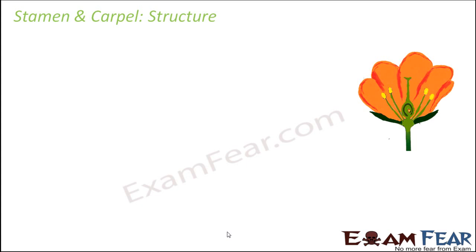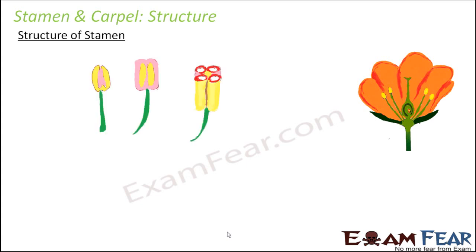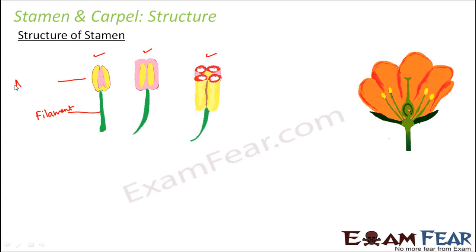Let us look at the structure of a stamen in detail. This is how the stamen looks when viewed from the back side, from its facial side, and in cross-section. A stamen consists of three parts: filament, anther, and connective. This is the filament, this is the anther, and the pink colored structure is the connective.